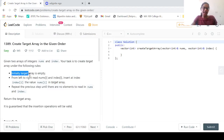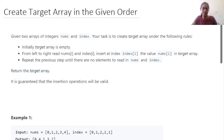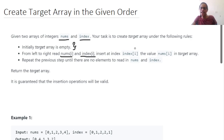Now let us create an array. Initially, the target array is empty. We have been given two arrays: nums and index. We need to read nums[i] and index[i], and then insert at index[i] the value nums[i] in the target array. This problem is very similar to one of the problems we have discussed earlier.